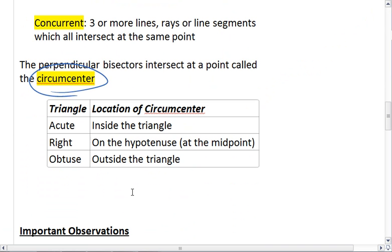So what you will want to have in your notes is that when our triangle is acute, the circumcenter is inside the triangle. When our triangle is right, the circumcenter is on the hypotenuse at the midpoint. And when our triangle is obtuse, the circumcenter is outside the triangle.